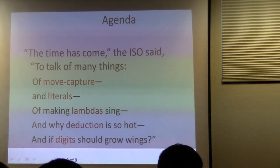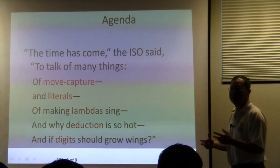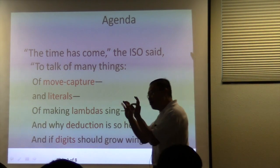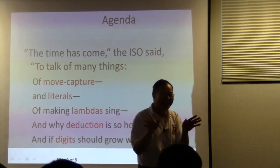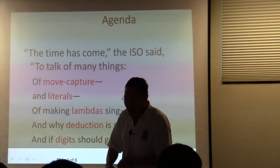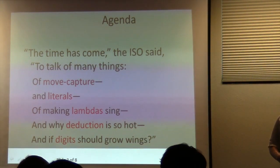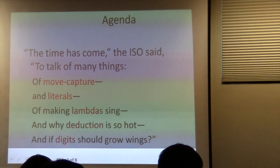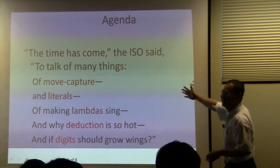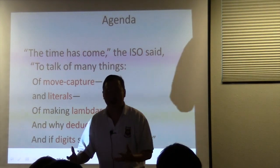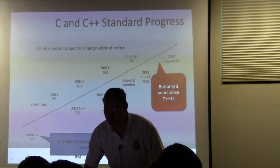So the time has come to talk of many things — this is an outline of my talk: mood capture and literals, making lambdas sing, why deduction is so hard, and if digits should grow wings. I think of digit separators as growing little wings on the side. This talk is going to cover what I think are some of the biggest C++14 changes — so it's not just another bug fix release. There are substantial things in there to help you move forward.